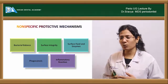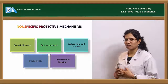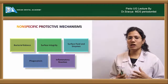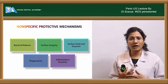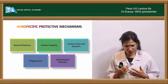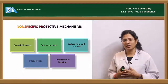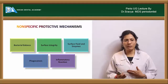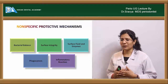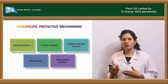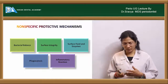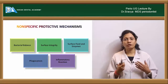Bacterial balance: the oral cavity has around 500 species of bacteria. In order to keep all bacteria in balance, there must be a balance between the normal flora and the pathogenic flora. Along with bacteria, you also have lots of fluids in the mouth — saliva and GCF — with different compositions including antibacterial enzymes and pH modifiers which keep bacteria in balance within the host.